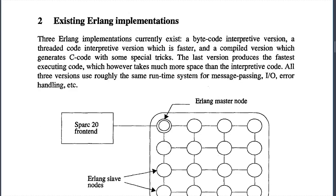Three Erlang implementations currently exist: a bytecode interpretive version — likely JAM; a second interpretive version which is faster — the BEAM; and a combined version which generates C code with some special tricks. The last version produces the fastest executing code, which however takes much more space than the interpretive code. All three versions use roughly the same runtime system for message passing, I/O, error handling, and so on.